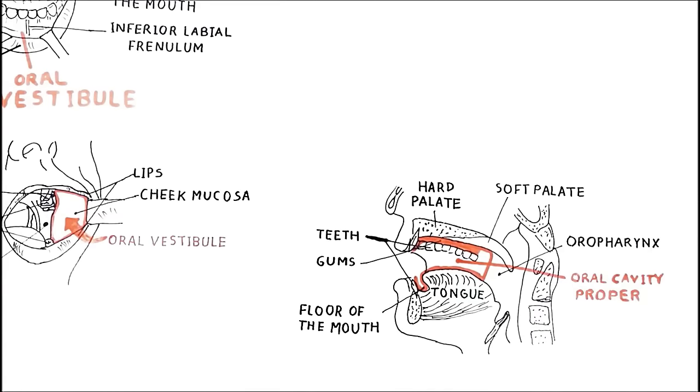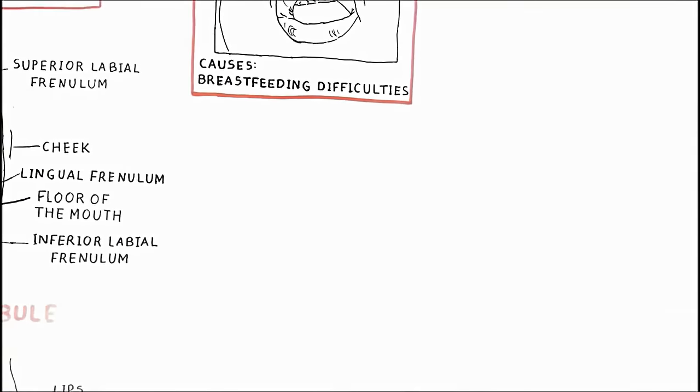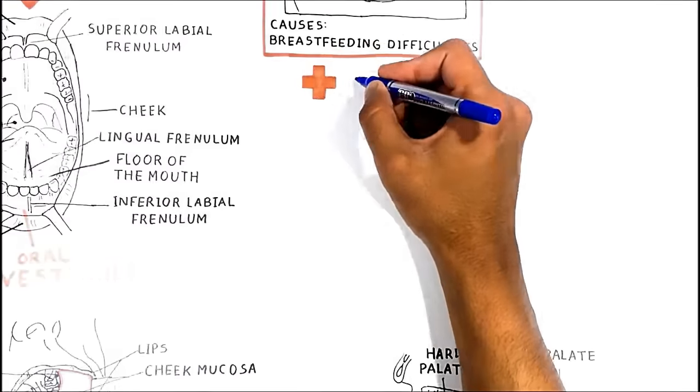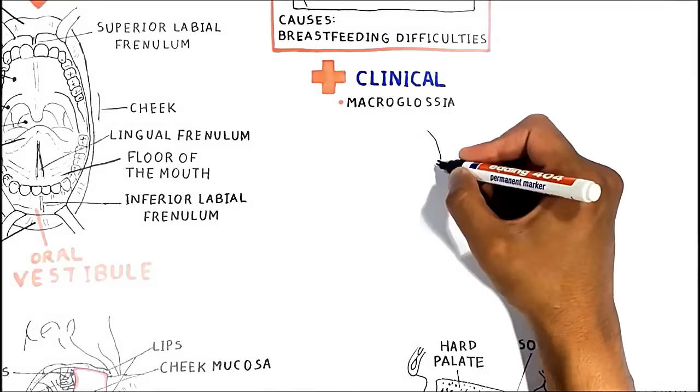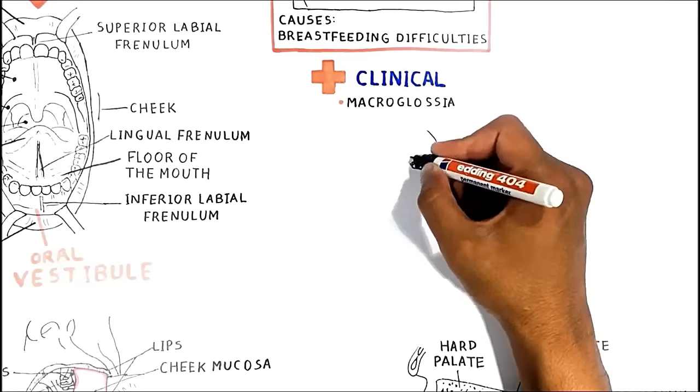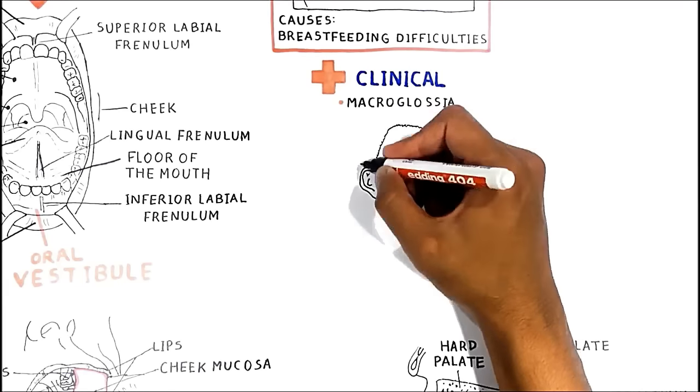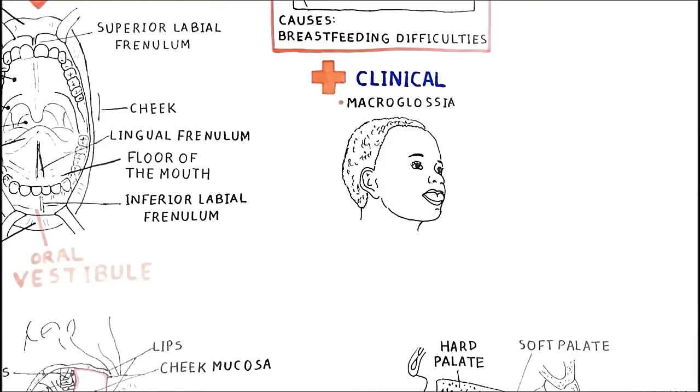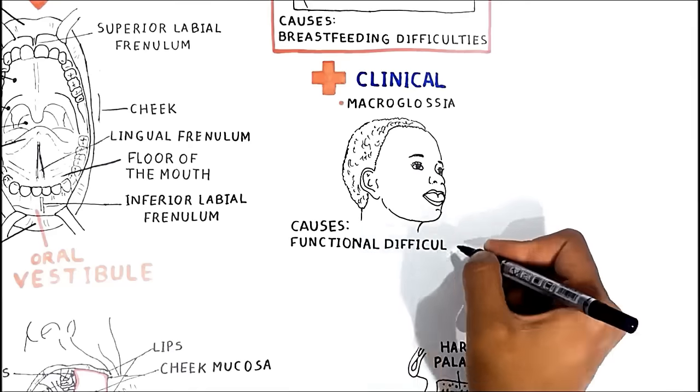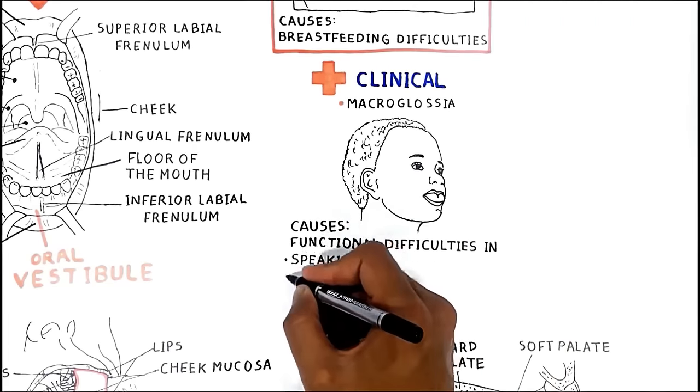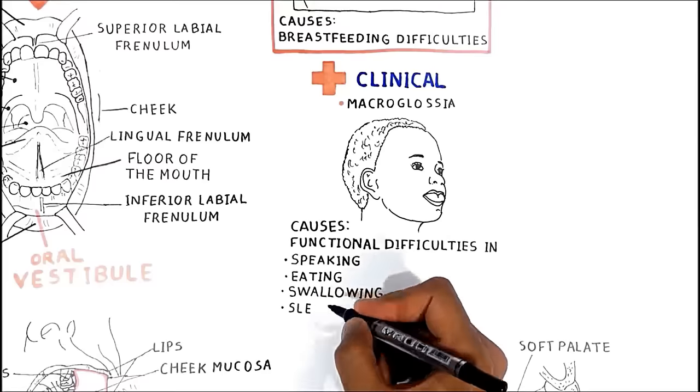The tongue, which is a muscular structure, fills a large portion of the cavity of the mouth proper. Sometimes the tongue may become even larger in case of macroglossia. This condition usually occurs in children and may be caused by a wide variety of congenital defects and acquired conditions. Severe enlargement of the tongue can cause functional difficulties in speaking, eating, swallowing, and sleeping.